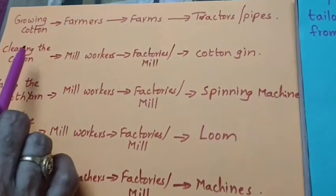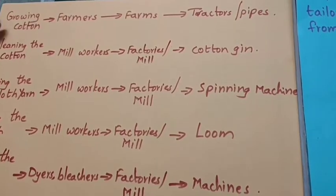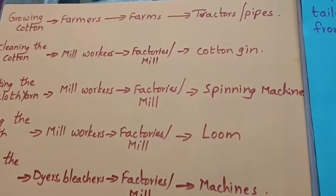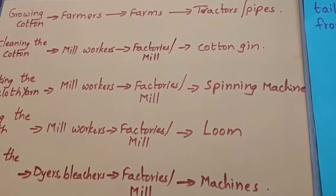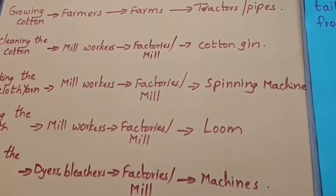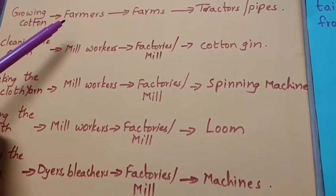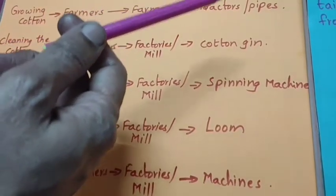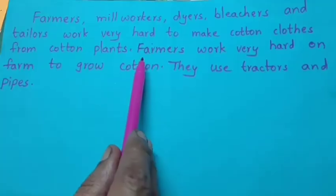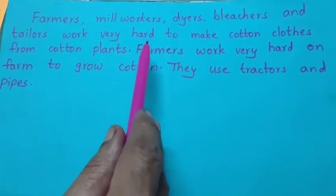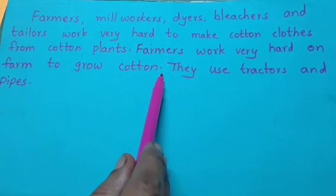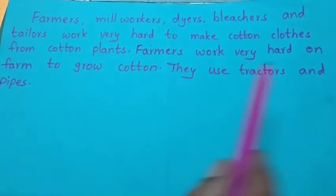Now see the first step — growing cotton. The details are: farmers, farms, and tractors or pipes. So how can we make this as a sentence? We can write: Farmers work very hard on the farm to grow cotton. They use tractors and pipes.